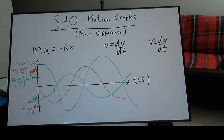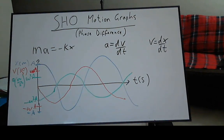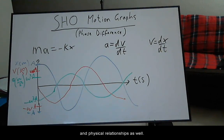In summary, to interpret the relationship between the position, velocity and acceleration graphs, keep in mind both the graphical, mathematical and physical relationships as well.